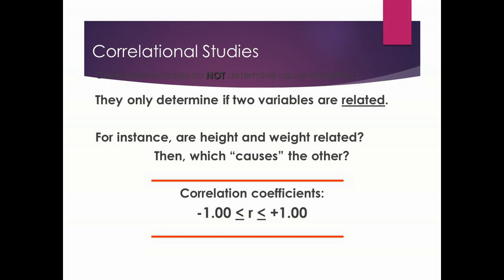Two variables I've looked at are height and weight. They are inevitably correlated for members of large populations generally, and thank goodness there are exceptions or it would be a very dull world. When you look at height and weight in large groups of people, as a general rule, when height increases, so does weight, and as height decreases, so does weight. So they seem to be related, though not for everyone.